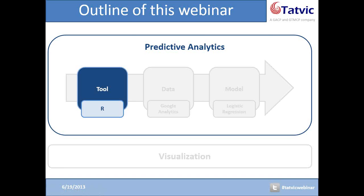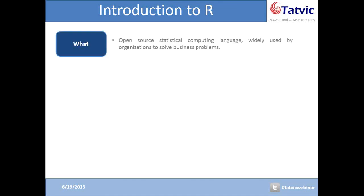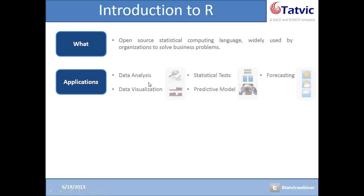Sure, Karel. Hello everyone. Let us have a brief overview about R and its various applications. R is a statistical computing language which by nature is open source and has been widely used by organizations to solve their business problems. The variety of applications that have been possible with R have made it a very popular language. R can be used for data analysis, statistical testing, forecasting, data visualization, and predictive modeling. Predictive modeling is the focus of this webinar and Amar will be explaining how to build predictive models in a very short time. Data visualization will be covered at the end of this webinar.